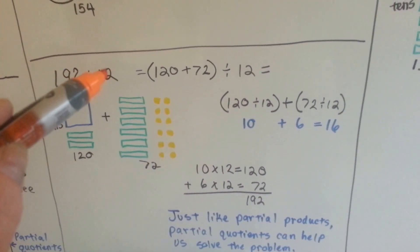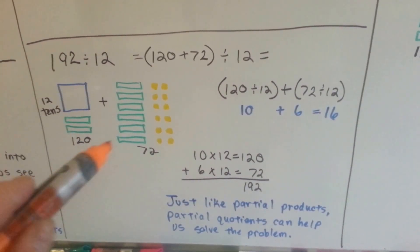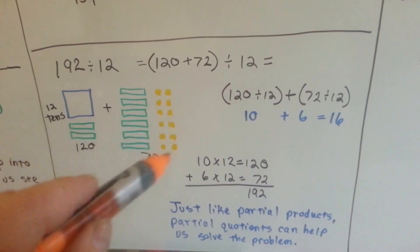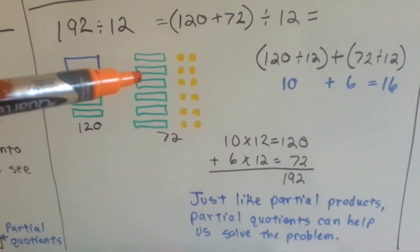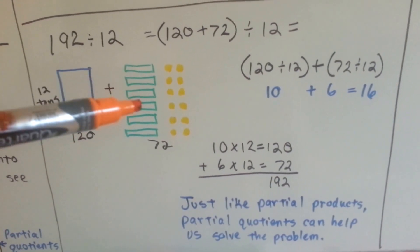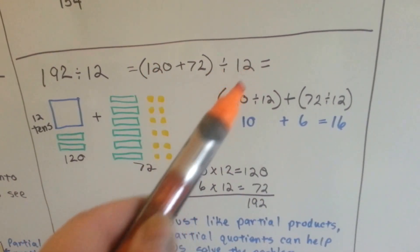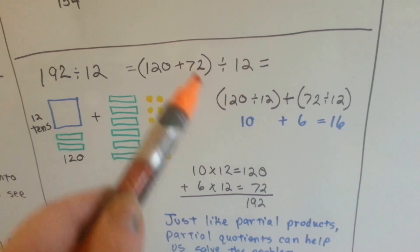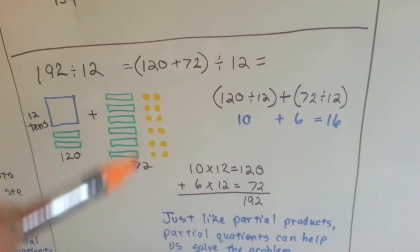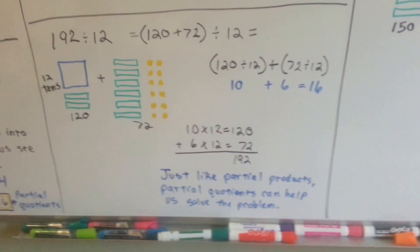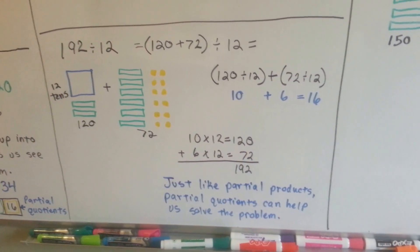We have 192 divided by 12 — we want to put them into groups of 12. I put 12 tens here, and then broke one of the tens up into ones so that I could put 2 above each group of 10. So each group is 12, and I've got 6 of them, totaling 72. So 12 goes into 120 and 12 goes into 72. 120 divided by 12 is 10, and 72 divided by 12 is 6, because we have 6 groups there and 10 groups here. Just like partial products help in multiplication, partial quotients can help solve division problems.